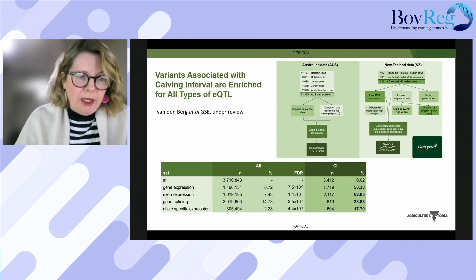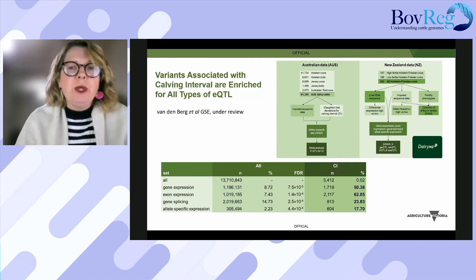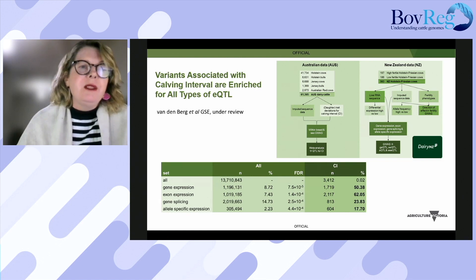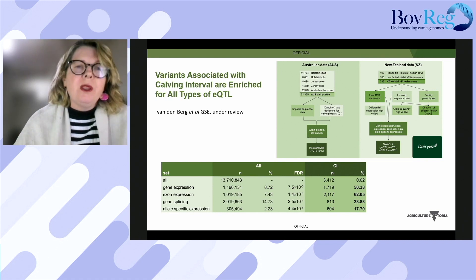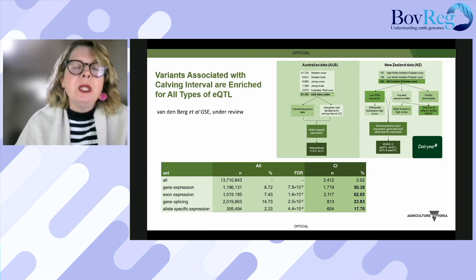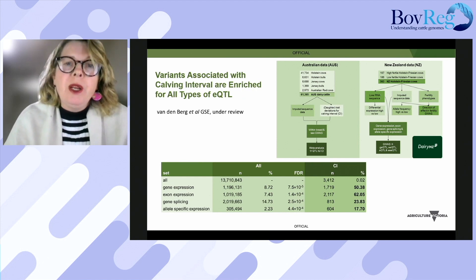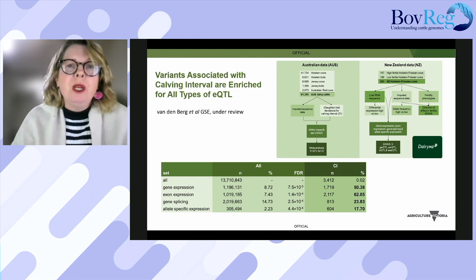We've had a focus in our new dairy bioprogram on health and fertility. We have a piece of work led by Irena Vandenberg in collaboration with Dairy NZ. She found that variants associated with calving interval are enriched in all types of expression QTL. The Australian data set was 60,000 cows with calving interval records and whole genome imputed sequence data, and she's done a meta-analysis to find QTL for calving interval, combined with gene expression data from 380 Holstein liver samples bred to be high and low fertile lines.